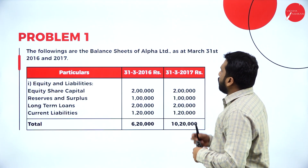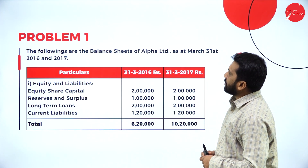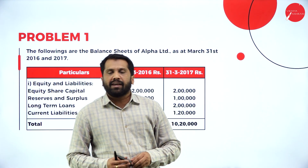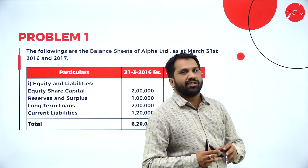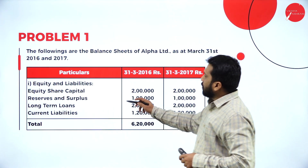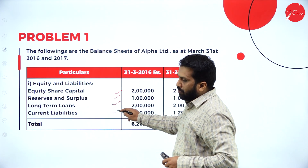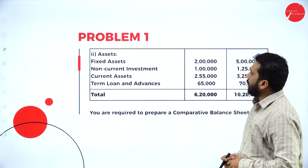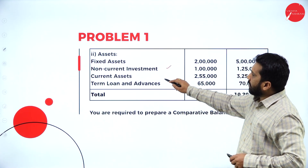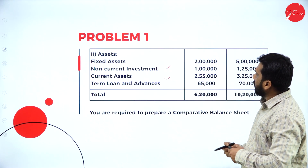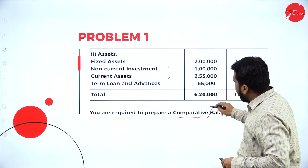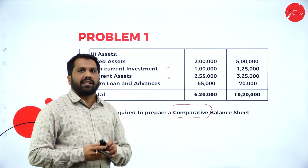The following are the balance sheet of Alpha Limited as at March 31, 2016 and 2017. We have all the liabilities and we have all the assets. Now we are doing a comparative balance sheet. Your equity liability — you have equity share capital, reserve, long term, current liability. These are the liabilities. In the assets, we have fixed asset, non-current asset, and current asset. You are required to prepare a comparative balance sheet — just you have to compare.